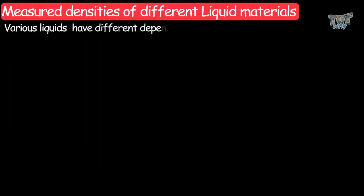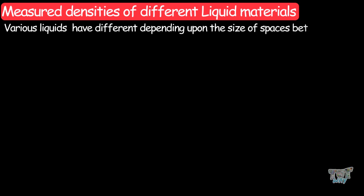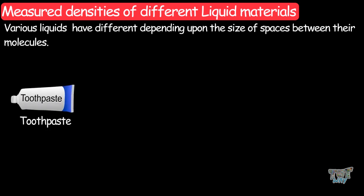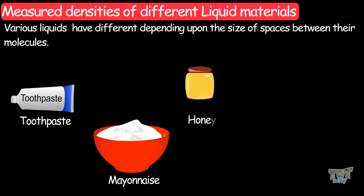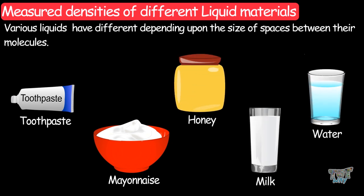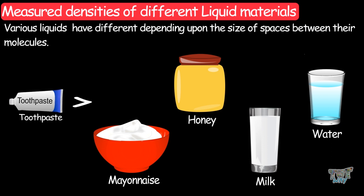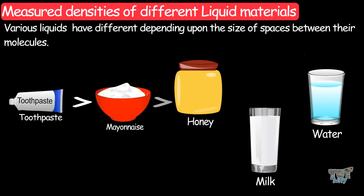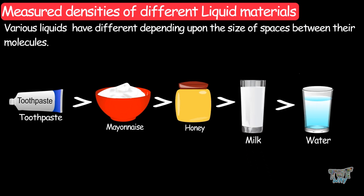Similarly, various liquids have different densities depending on the spacing between their molecules. Consider these liquids ranked from most dense to least dense: toothpaste, mayonnaise, honey, milk, and water. Toothpaste is the most dense, and water is the least dense among these.